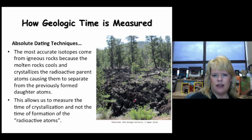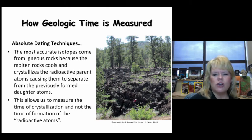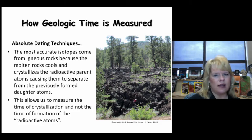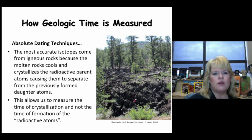Absolute dating techniques are used by collecting certain types of rocks in the field. The most dependable ones are igneous rocks, and specifically lava flows are really good — like this one right here, the Bonita lava flow in Arizona, which is where Sunset Crater is, right outside of Flagstaff. The reason is that as molten rocks cool and crystallize, the radioactive parent atoms separate from previously formed daughter atoms, giving you a fresh clock.